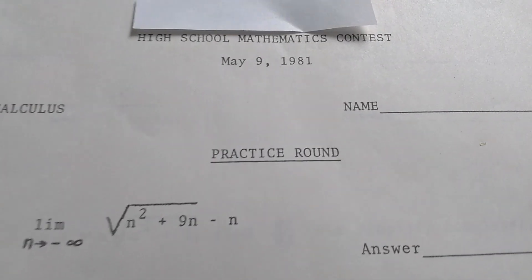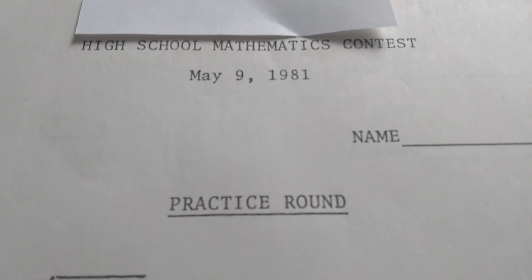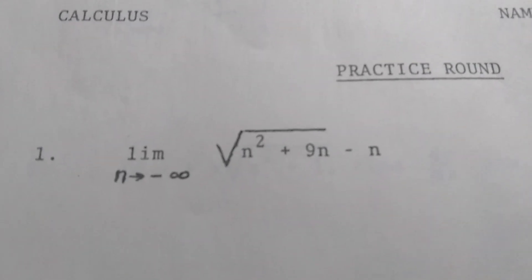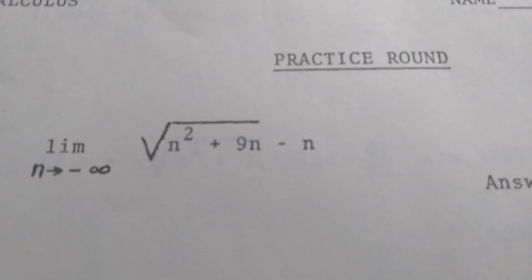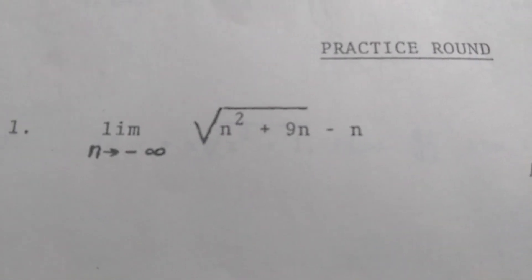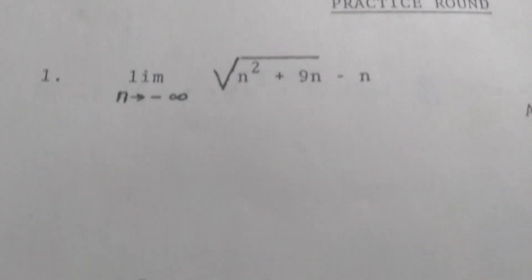Okay so this is the first page. It actually has the date May 9th 1981 and the first question is the limit. It doesn't look too bad. I think we could do this by rationalizing, so multiplying by the conjugate. Not too bad.